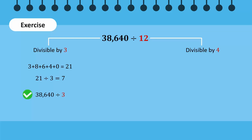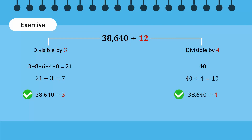Now, is the number formed by the last two digits of this number divisible by 4? Yes! The last two digits make the number 40. Because 4 times 10 equals 40, we know that 38,640 is divisible by 4. Now we know that this number is divisible by 12, because it is divisible by both of its factors, 3 and 4. Good job!